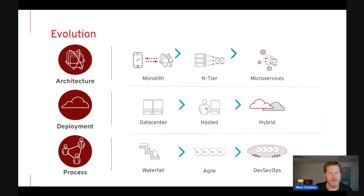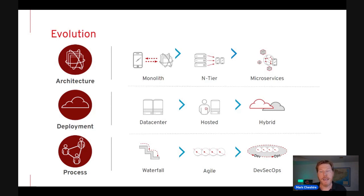Coming back to our industry, we've seen evolution along three dimensions: architecture, deployment, and process. When you think about this relative to cloud native, the further you move to the right, the closer you are to cloud native. Many of you are on this path, hopefully quite far along. Getting there has not been an easy path — there are a lot of rocks along the way. The complexity is really challenging at times. The potential is great, but there's still a lot of work to realize it.